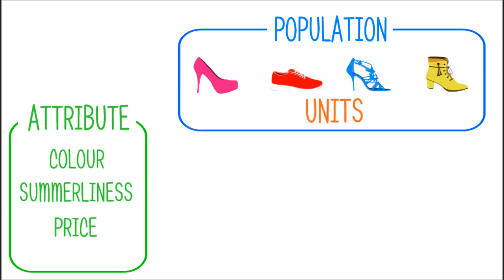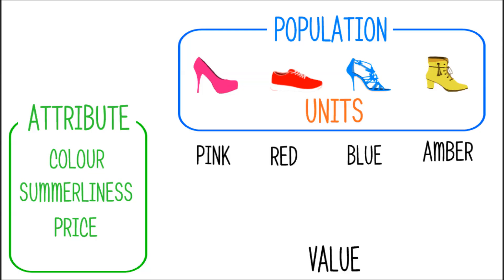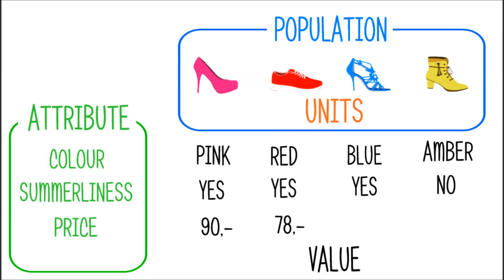Then Lily assessed each unit, i.e. each pair of shoes, against the attributes and assigned values. So the values per pair of shoes against color are pink, red, blue, and amber. Against summerliness, it would have been yes, yes, yes, and no. And as far as prices are concerned, we only heard about the sandals and sneakers, but let's just say it would have been 90, 78, 140, and 112 euros.